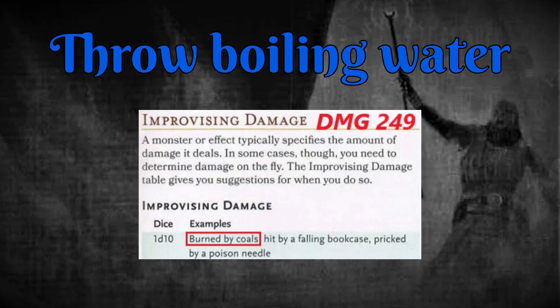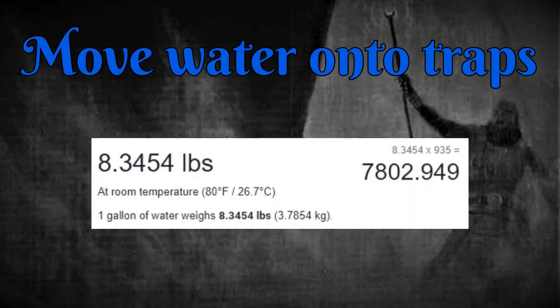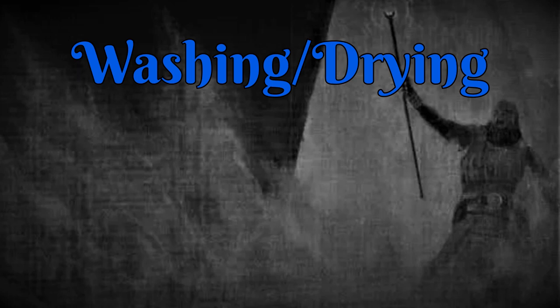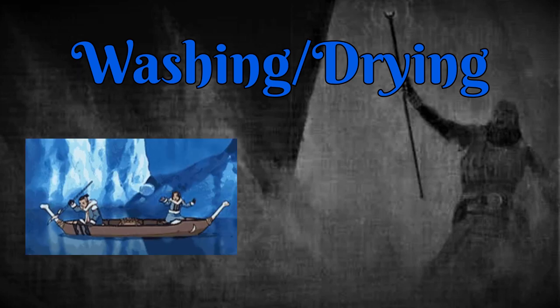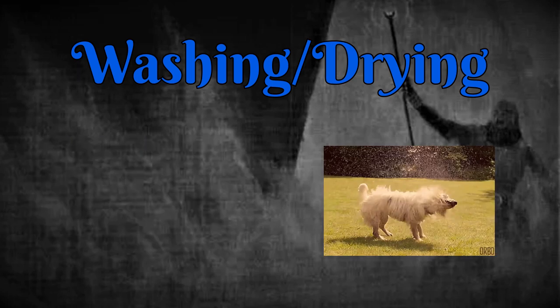Another niche use is to move water onto suspected traps. The maximum weight you can move with Shape Water is approximately 7,800 pounds. Even a fraction of that should be enough to trigger a pressure plate, even if it does immediately splash onto the floor and disperse. And then there's the fun roleplaying use to wash or dry a creature — either by moving water onto them to wash them, or by moving it off of them to dry them.